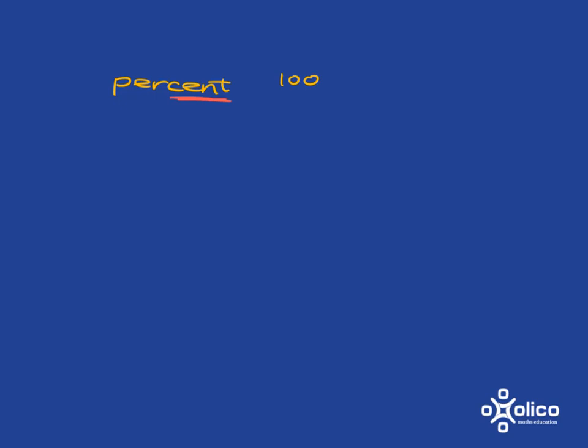The exact meaning of percent: if we wanted to figure out two-fifths and write it as a percentage, all we're asking ourselves is, if we get an equivalent fraction to two-fifths that has a denominator of a hundred, what will the numerator be? That numerator will be the percentage.